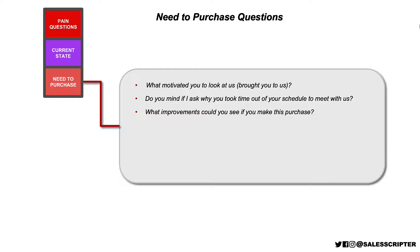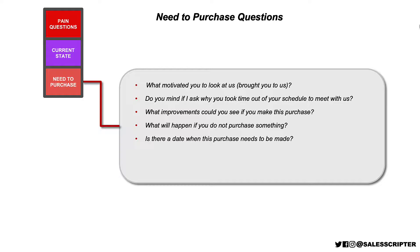What improvements could you see with this purchase? You know how your software can help them, but get them to tell you. What will happen if you don't purchase anything? Is there a date when you need this purchase to be made by? What happens if this purchase is not made by that date? These date questions help you identify if there is a compelling event. If there is a compelling event — a date when the prospect needs the software set up — the prospect is strong in the area of needing to purchase and is a more qualified prospect.